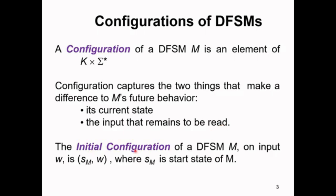The initial configuration of the DFSM M is written as SM, W, where SM is the start state of the machine M and W is the input string.